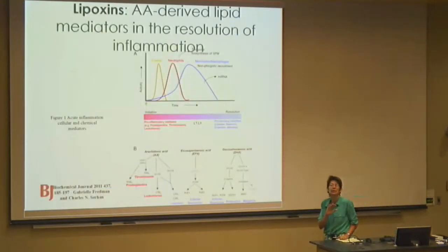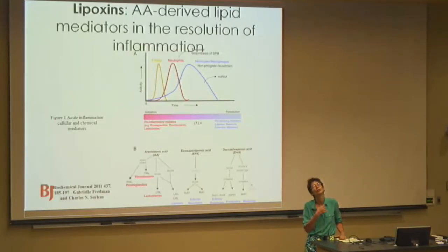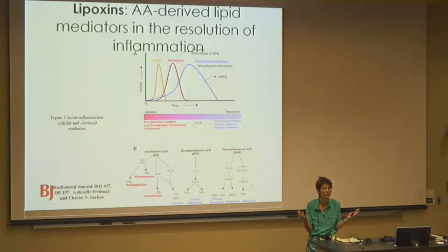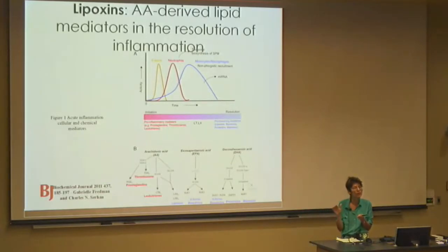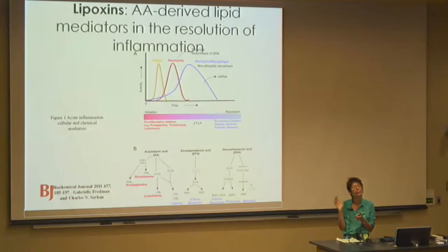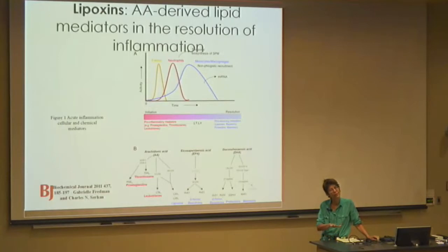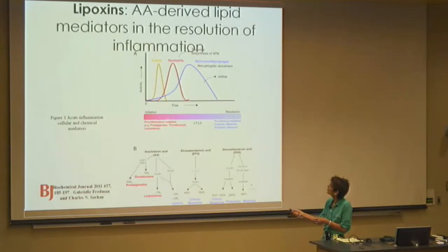People used to think that inflammation just started and then burned itself out — you swell up, get neutrophils, eat up bacteria, and it dies off. But really there's another phase called the resolution of inflammation. There is a phase where you start out with inflammation — responding to invaders — and then you have this resolution of inflammation. Here is where you make pro-inflammatory mediators, things like the leukotrienes, and then you make pro-resolvent mediators.